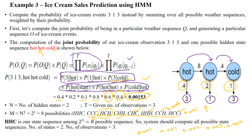Now we have eight possibilities. From these eight possibilities, we should identify the maximum probability. The maximum probability is for the sequence HCH — hot, cold, hot — which gives 0.007. So the maximum probability is HCH, indicating that on day one it was hot, day two cold, day three hot.